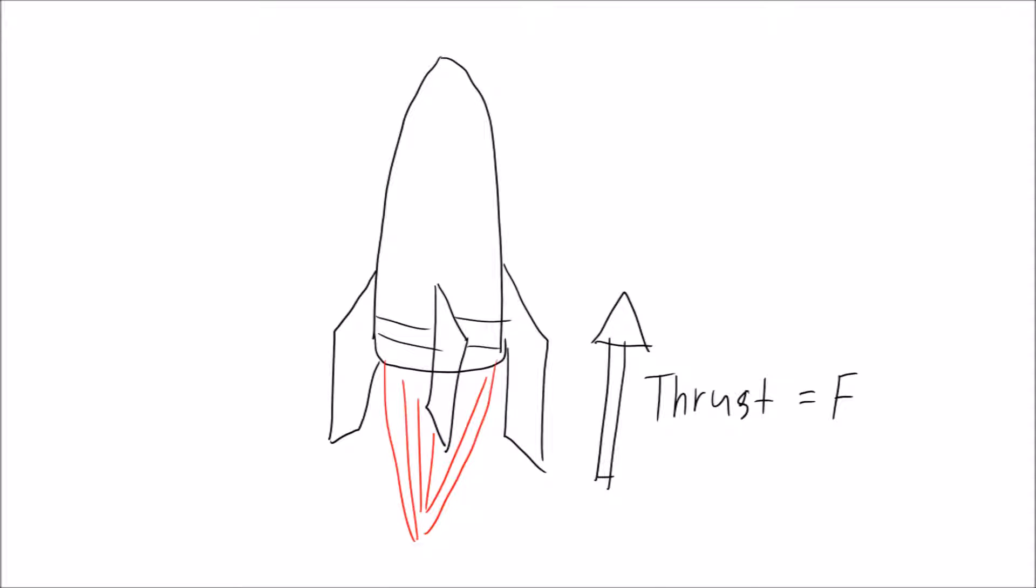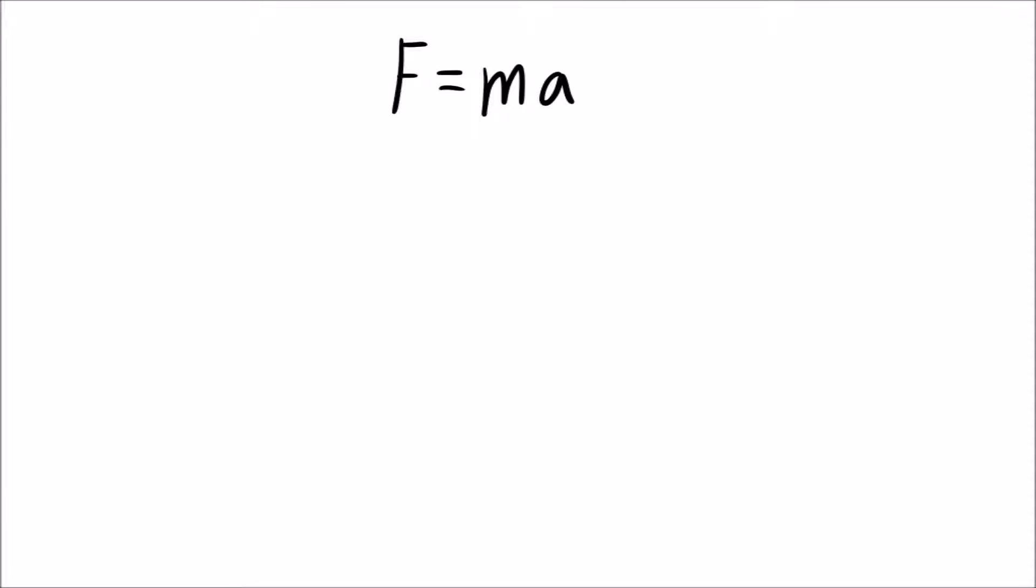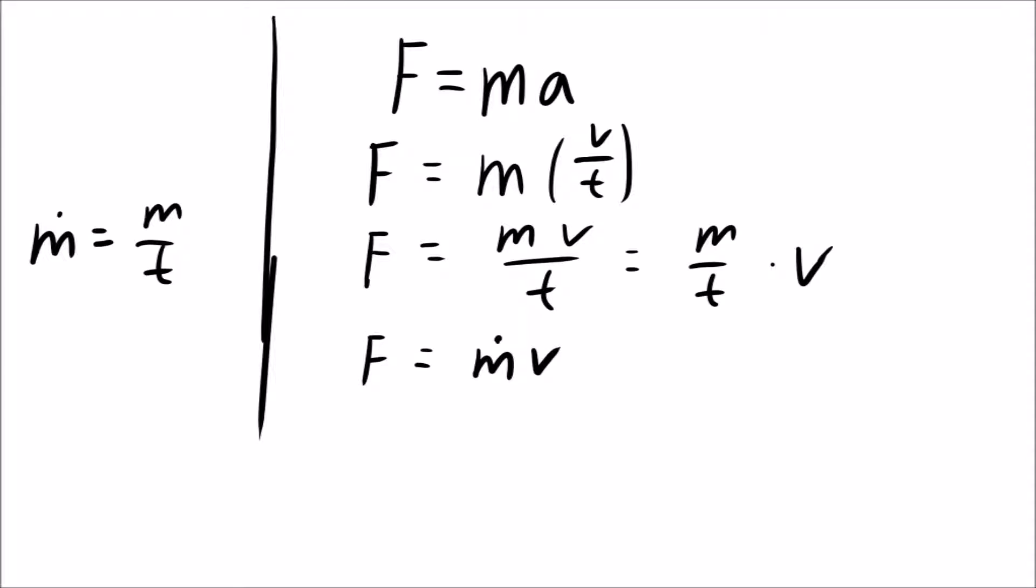Thrust is how much force is generated by combustion. We know by Newton's second law that force is equal to mass times acceleration. Acceleration is equal to velocity over time. We can define a quantity, the mass flow rate, that tells us how much mass of propellant flows through into the combustion chamber per unit time. And our equation for thrust becomes F equals mass flow rate times velocity.